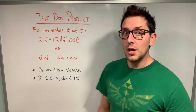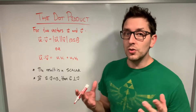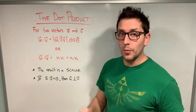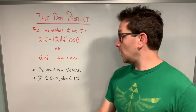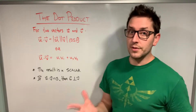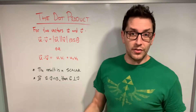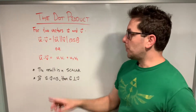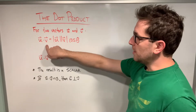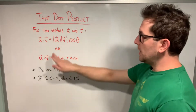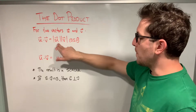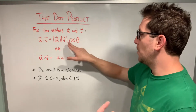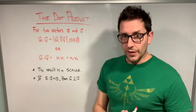The dot product is a very simple but powerful calculation that can tell you a lot about two vectors. Now before going through examples, I want to cover two key definitions or formulas for the dot product that you can use depending on the scenario. Imagine we have two vectors u and v. The dot product u·v is equal to the product of the magnitudes of each of those vectors multiplied by the cosine of the angle in between the two vectors.